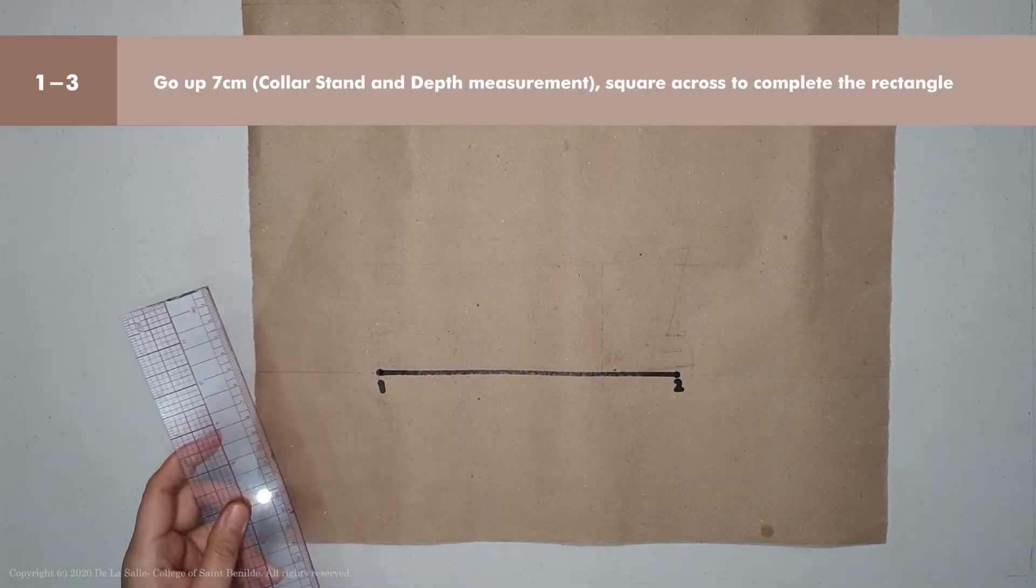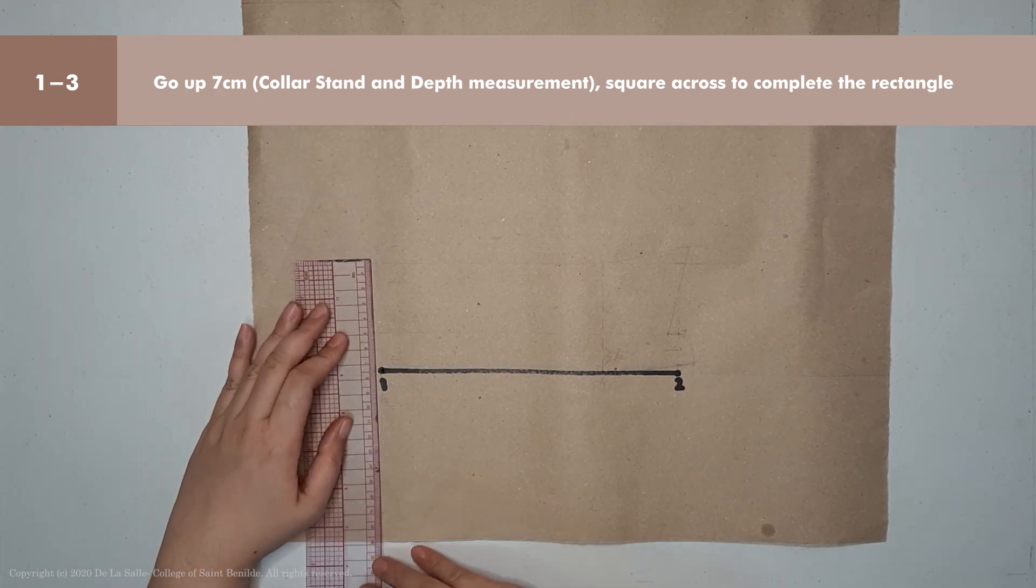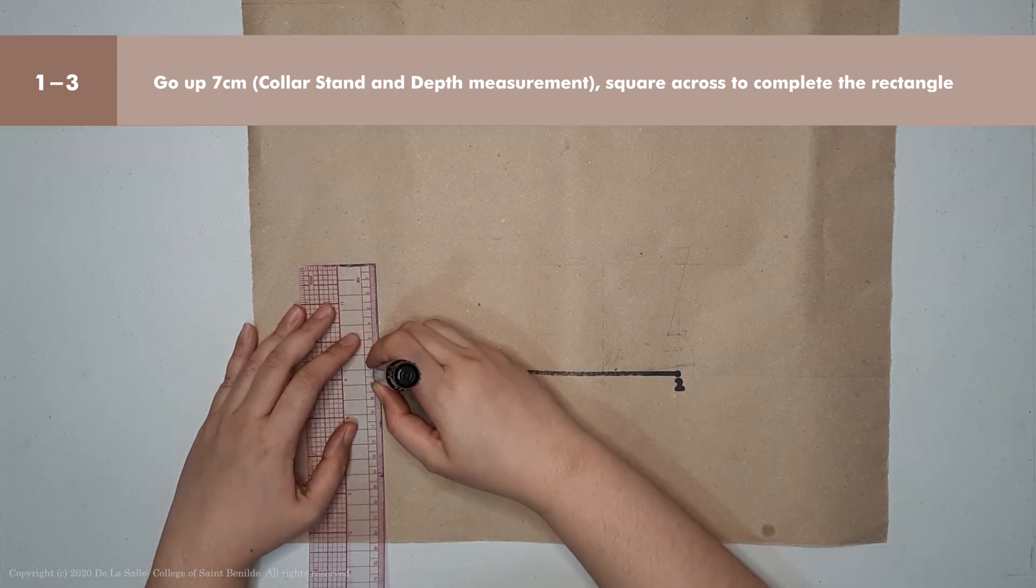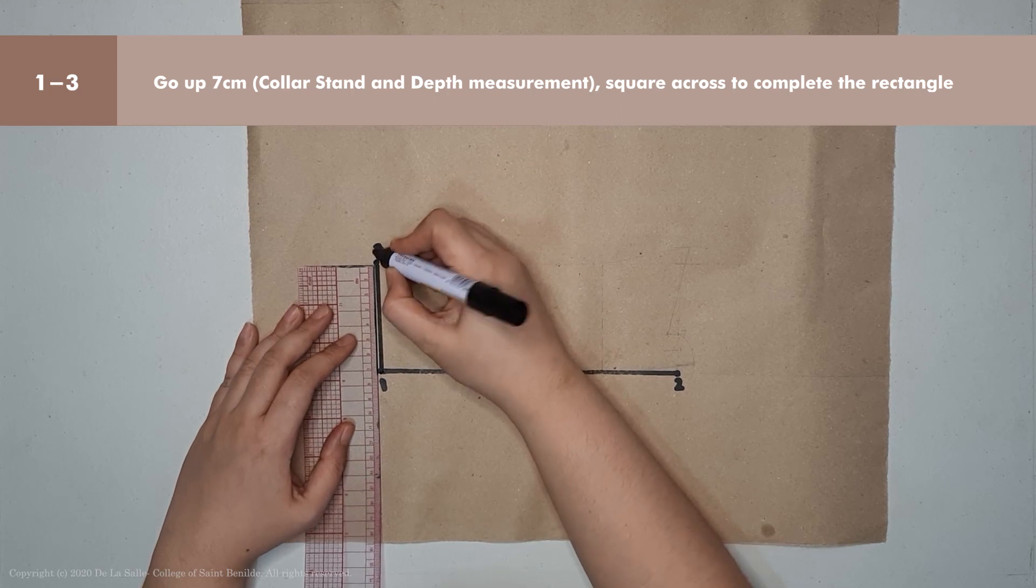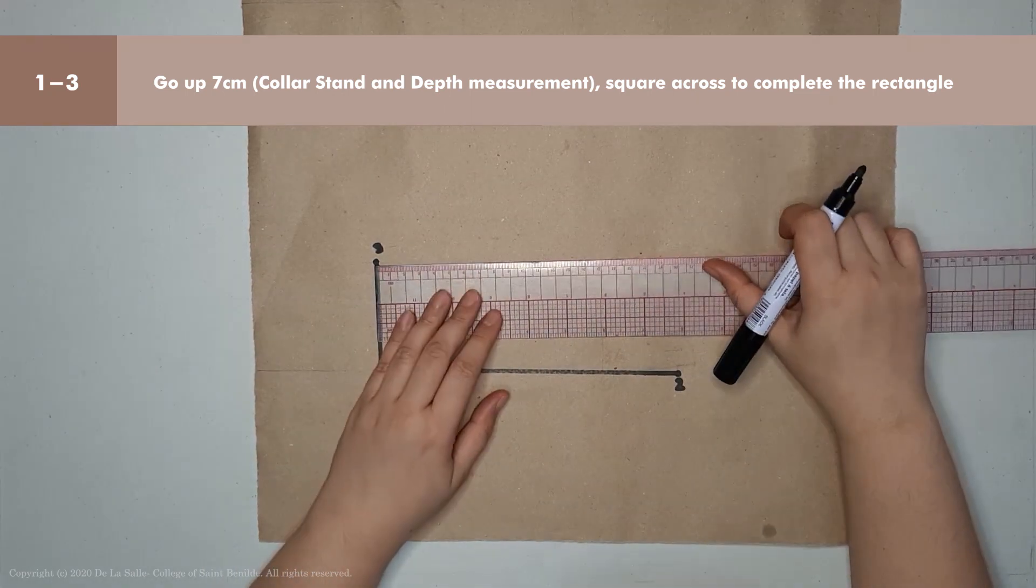Then from 0.1 to 0.3, go up 7 cm. That's point 0.3. Then square across and complete the rectangle.